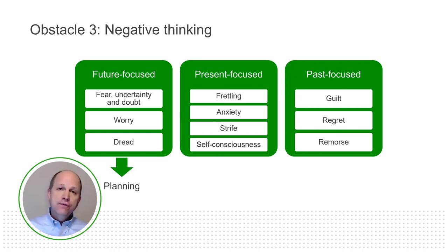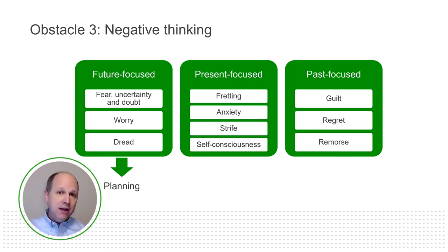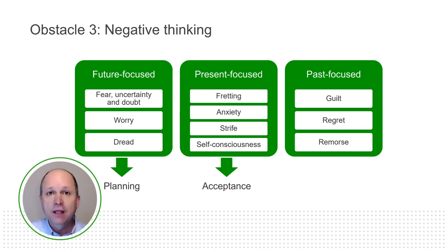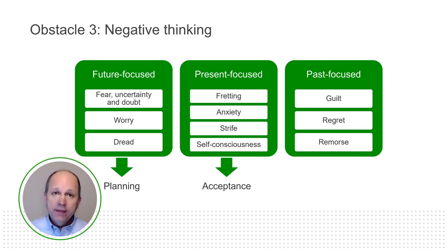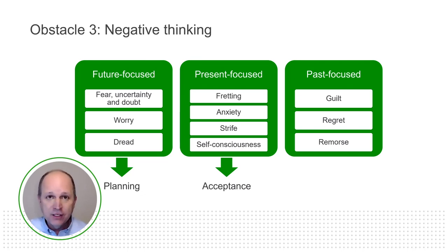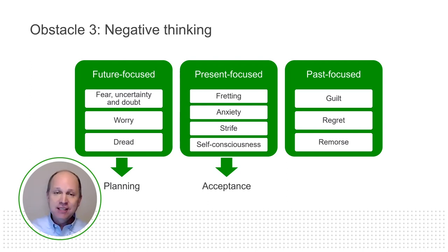The inoculator for future-focused negative thinking is planning. You cannot change the future or live in the future, but through planning, you can alter the future that will inevitably come. The inoculator for the present is acceptance. If I just accept the things I can't change — the fretting, the anxiety over which I have no control, the fact that people are imperfect — that gives me another saying: we are messy people living with messy people, trying hopefully to make the world a little bit less messy.